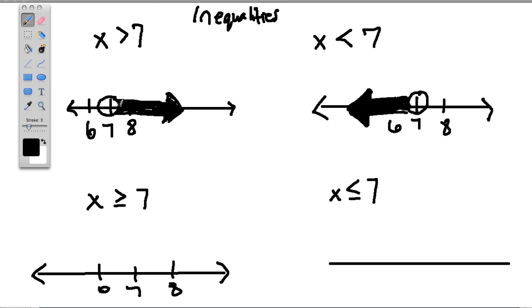How is this graph different from this one? Well, instead of an open circle, we're going to fill it in. That tells us that 7 could be your answer. And then we're going to draw an arrow this way, because every number bigger than 7.